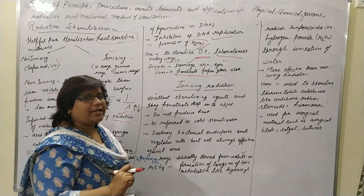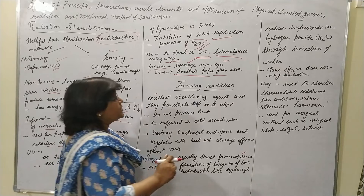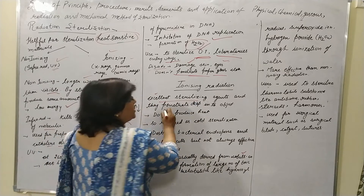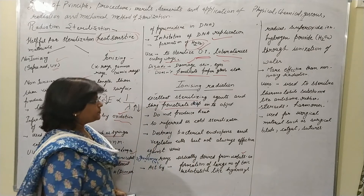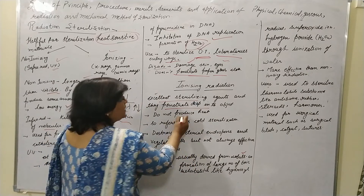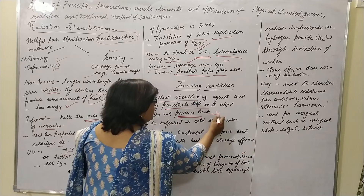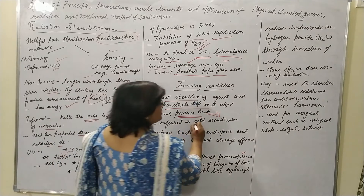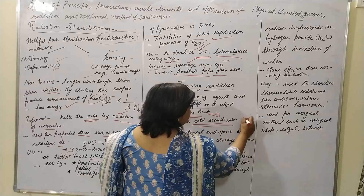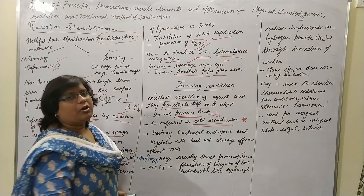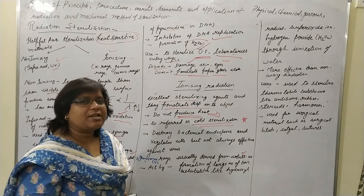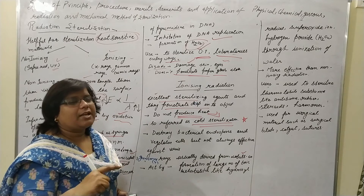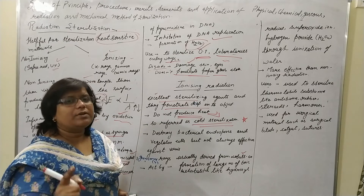Now coming to the second part — ionizing radiation. Ionizing radiation is an excellent sterilizing agent and penetrates deep into the object. The main advantage is that it does not produce heat, so it is referred to as cold sterilization. This is the main distinction: non-ionizing radiation produces heat, but ionizing radiation does not.